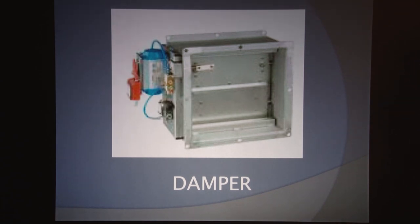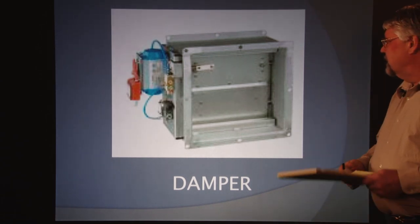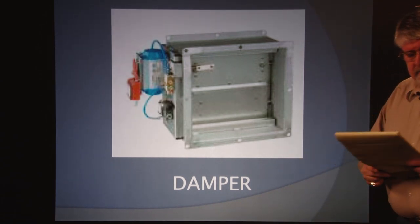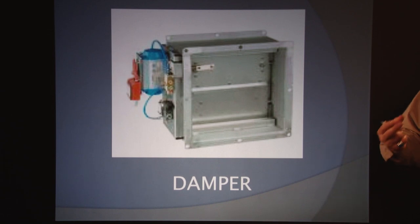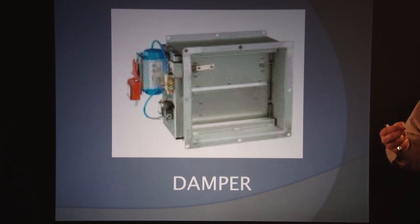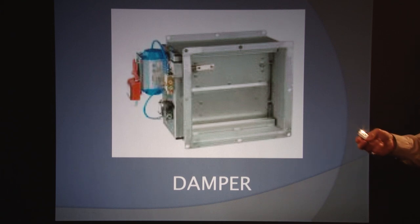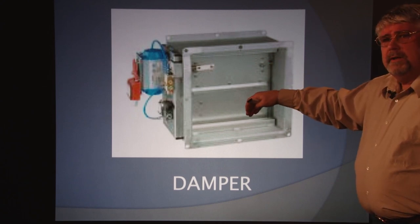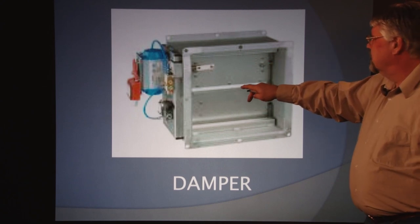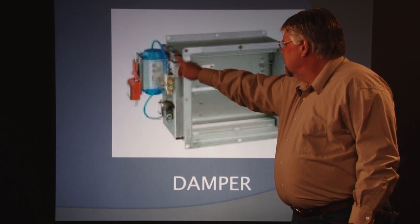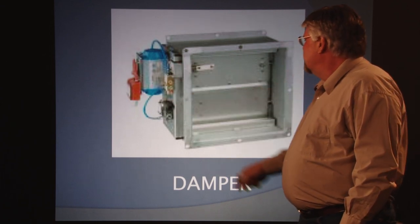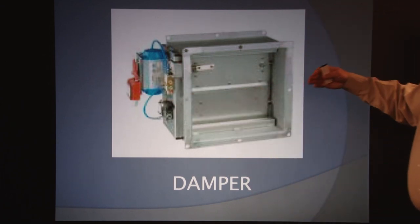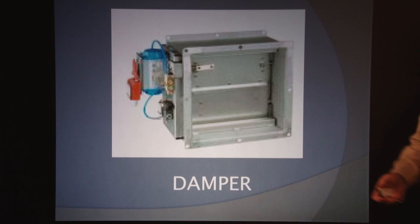A damper. This happens to be a damper that's automatically controlled. It's a manually or automatically controlled device to regulate the draft or flow of air or combustion gases. This can be opened at any angle or closed totally, depending on the setting. Here you see the automatic adjustment devices on the side which allow it to move at whatever angle you preset it for.